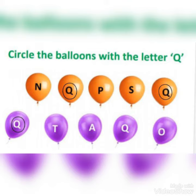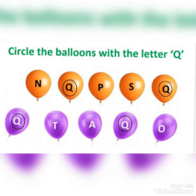The fourth balloon is letter Q. What you have to do now? You have to put a circle on that fourth balloon, letter Q. Very good. The last balloon is letter O, so no need to circle that balloon.